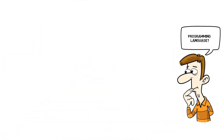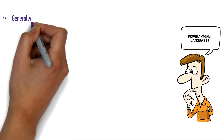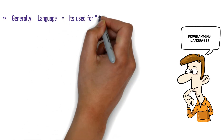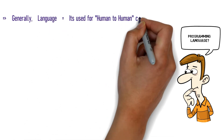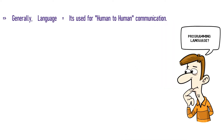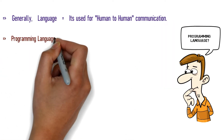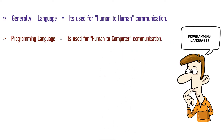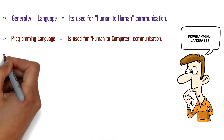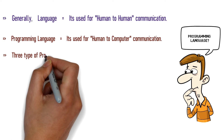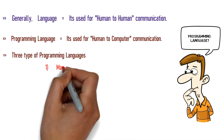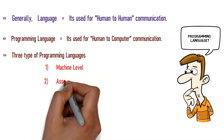What is a programming language? We will discuss three types of languages we use to communicate with a computer. One is machine level, the second is assembly level, and the third is high level.